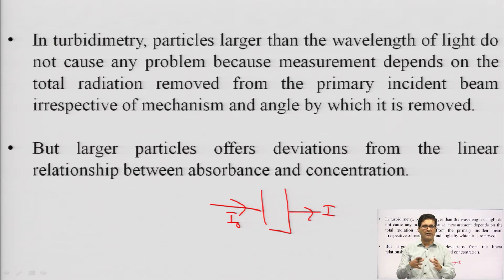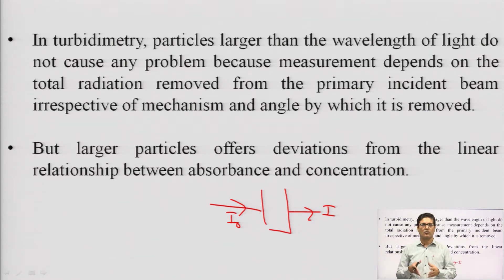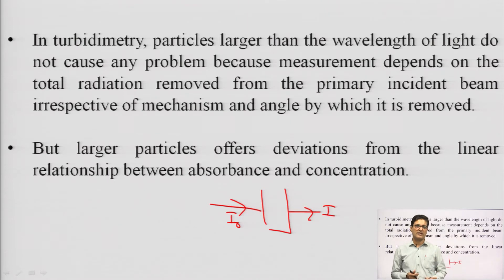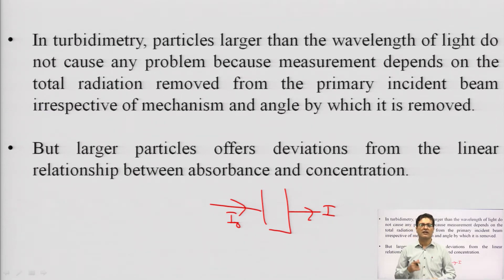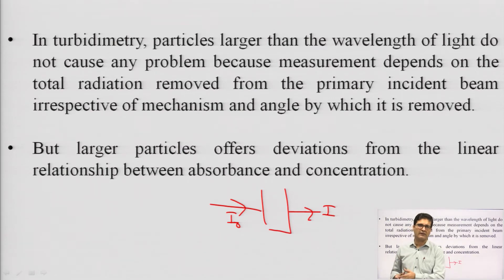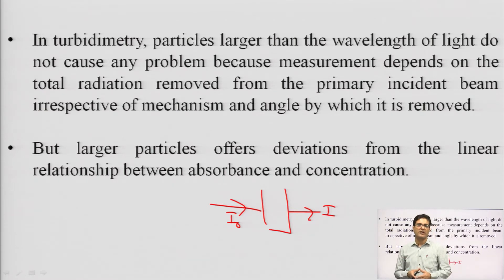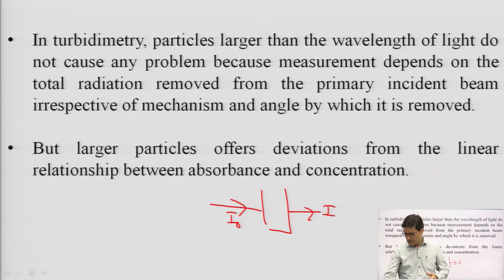Larger particles generally cause more deviations in turbidimetry. In nephelometry, you use less dense media with smaller particle sizes where scattering is less. Where scattering is very high, particle size is large, and concentration or density of the suspension medium is high — in that case you can use turbidimetry for determination of concentrations.